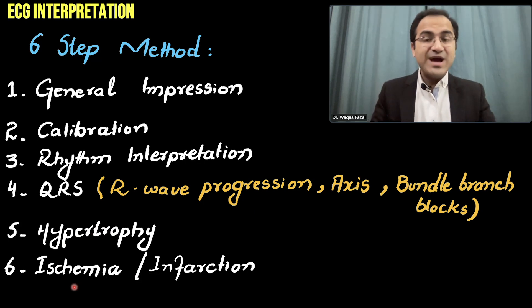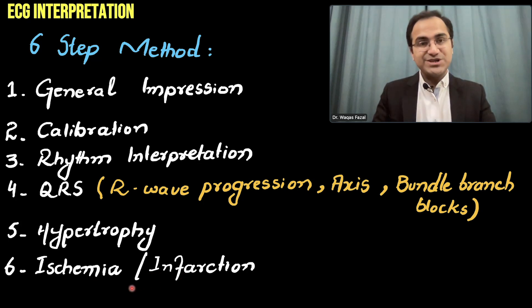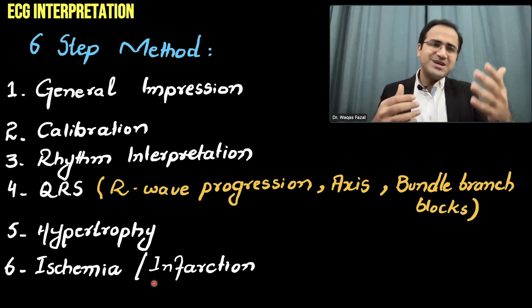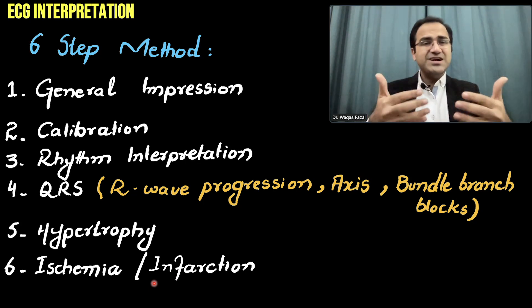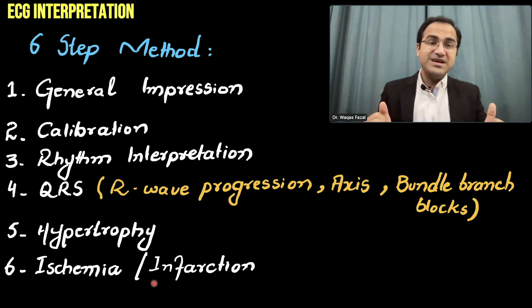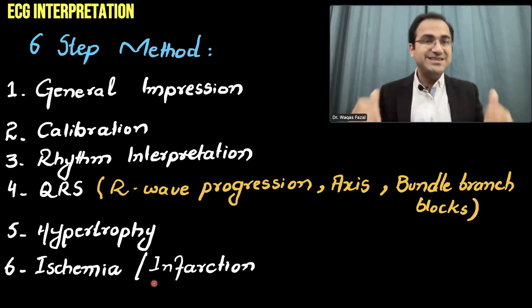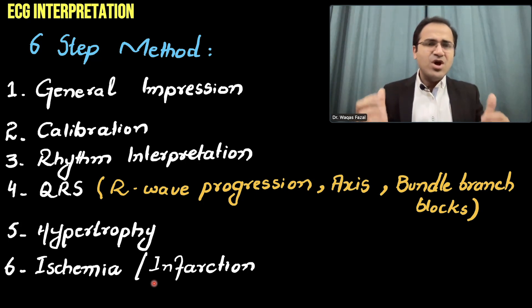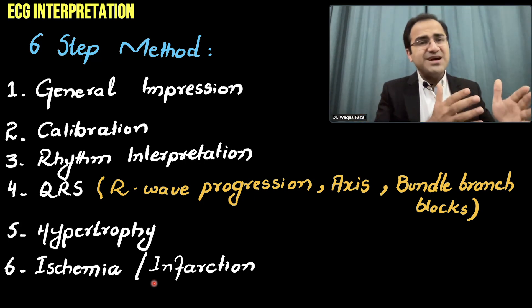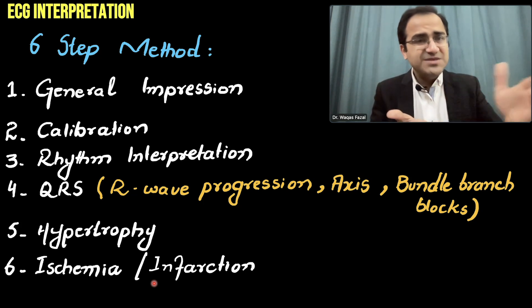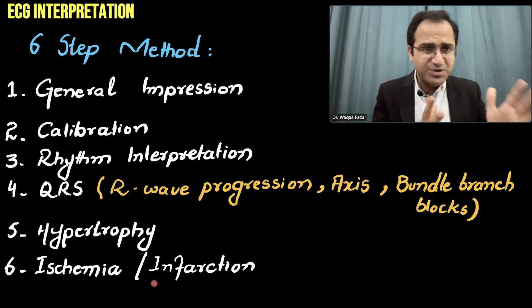You might wonder why ischemia and infarction are placed in the last step. Basically, whenever an ECG is showing ischemia or infarction with ST segment elevation, we always get blinded by the fact that the patient is having infarction and we miss out many important details. Now if the patient is having ischemia or infarction and there is an emergency, you can quickly go to ischemia and infarction assessment and treat the patient.